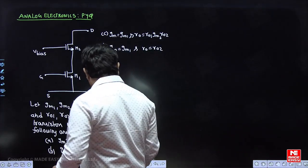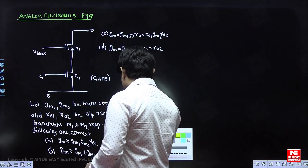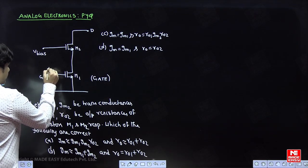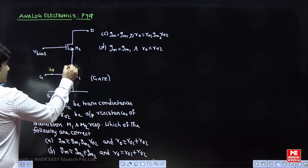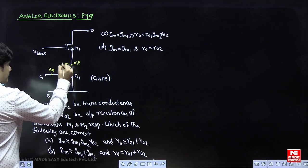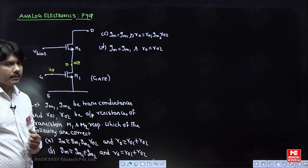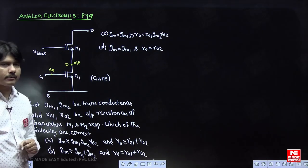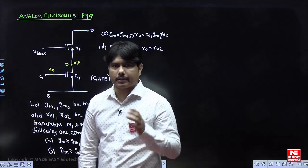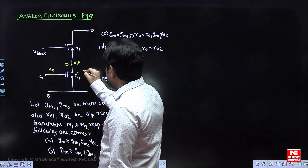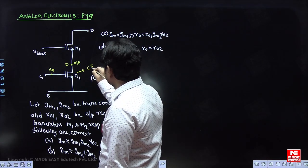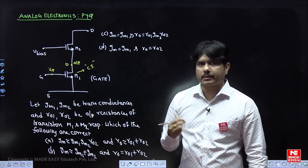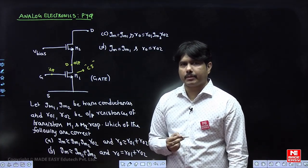If you see the terminals: here we have the gate, this is the input we are taking, and this is the output we are taking at the drain. So it is very clear that the first M1 MOSFET is in common source configuration, because the output is at the drain and the gate is the input. So M1 is identified as a common source transistor — input is gate, output is drain, so source is common.